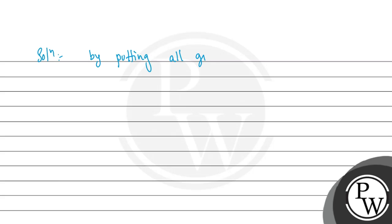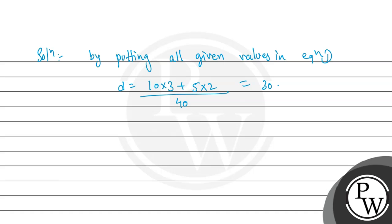By putting all given values in the equation, we have D equals 10 times 3 plus 5 times 2, divided by 40. This will be 30 plus 10 divided by 40, which further solves to 1 meter. Therefore D equals 1 meter. So this is our final answer. I hope you understood it well. Thank you and best of luck.